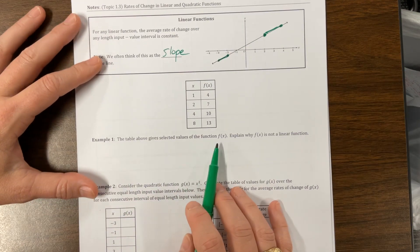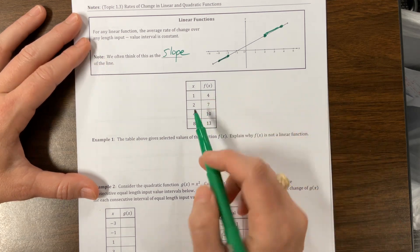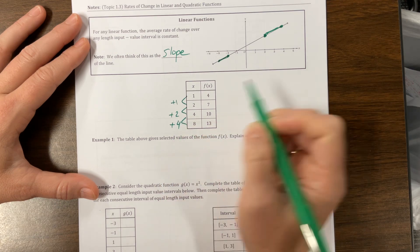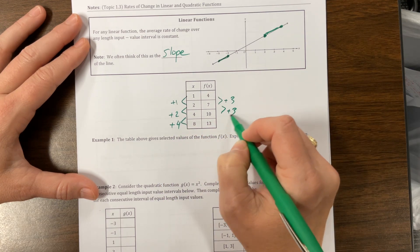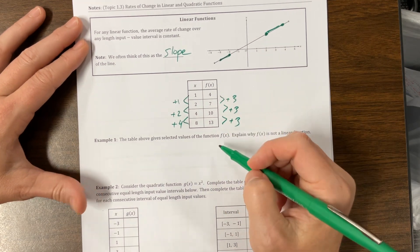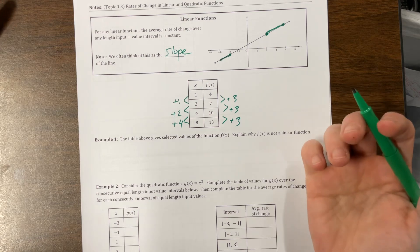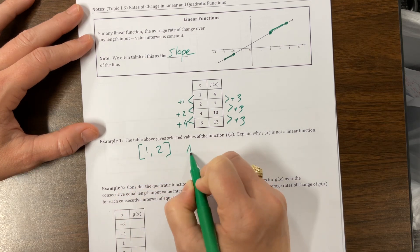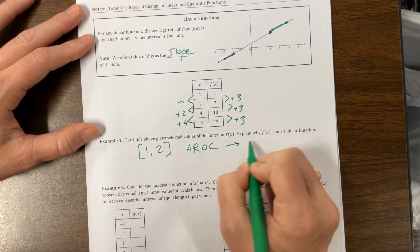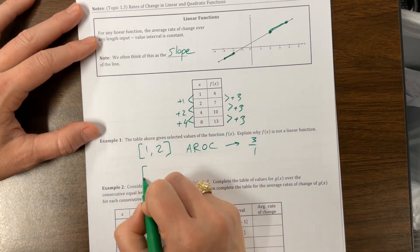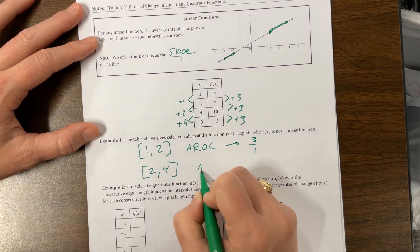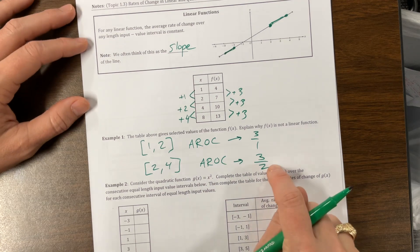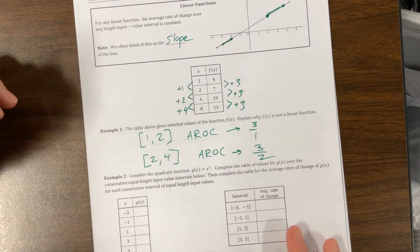This table gives us selected values of the function. Explain why the function is not a linear function. Notice when I go from here, I added 1, I added 2, I added 4. From here, I add 3, I add 3, I add 3. It looks like my y values are just increasing by 3 the whole time, so I must have the same average rate of change. But no, the average rate of change over the interval from 1 to 2 would be 3 over 1, but the average rate of change from the interval 2 to 4 is now 3 over 2, which is not the same.